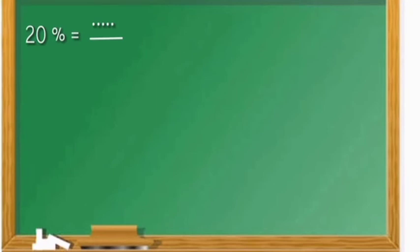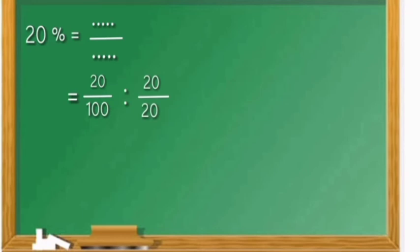Contoh selanjutnya: dua puluh persen diubah menjadi pecahan. Maka, dua puluh per seratus. Dibagi dua puluh per dua puluh. Dua puluh bagi dua puluh sama dengan satu, seratus bagi dua puluh sama dengan lima. Jadi, satu per lima.